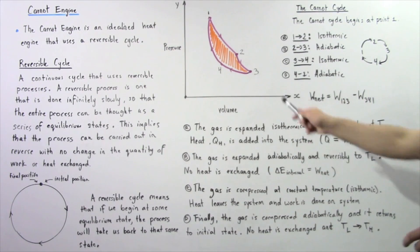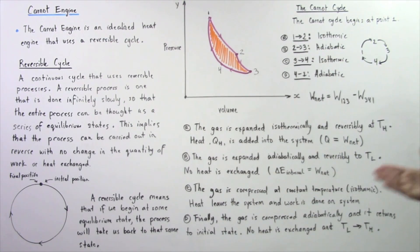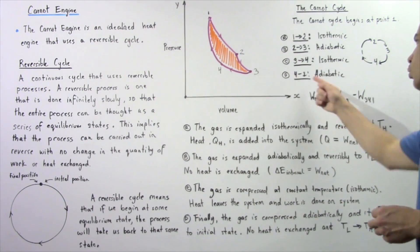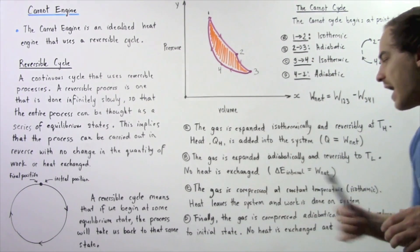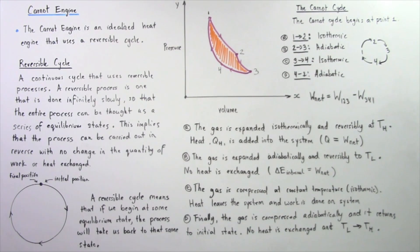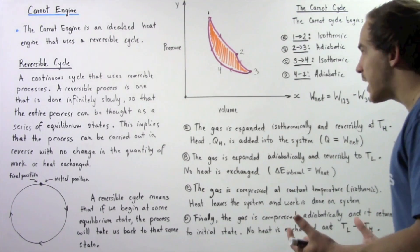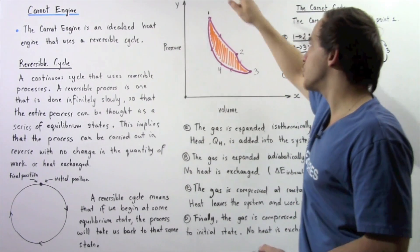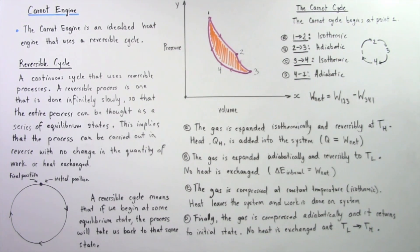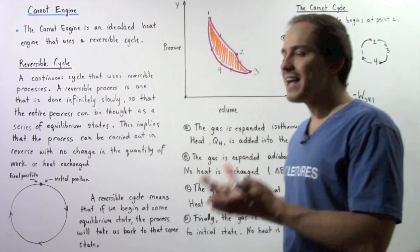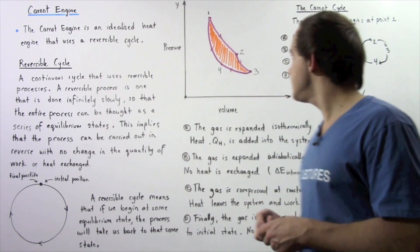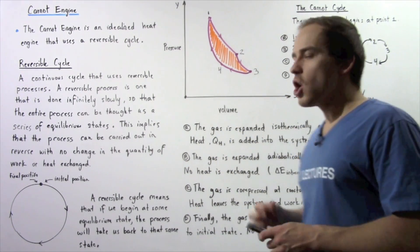In process C, the gas is compressed isothermally at constant temperature. Heat leaves the system and work is done on the system. In process D, the gas is compressed adiabatically and returns to the initial state at point one. No heat is exchanged, and TL rises back to TH. The temperature at point one when we return is the same as when we started, completing the reversible Carnot cycle of four processes — two isothermal and two adiabatic.